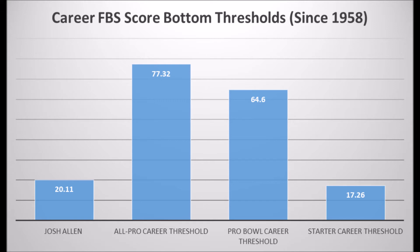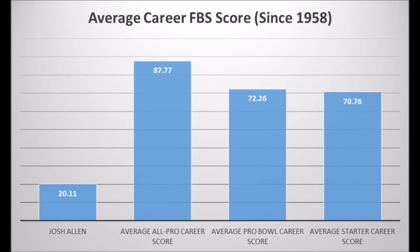The career data makes things a bit worse. Josh Allen only had a 20.11 career FPS score. The All-Pro career threshold — meaning there's never been a multiple All-Pro quarterback with less than a 77.32 career score — Josh Allen has a 20.11. The Pro Bowl career threshold is 64.6, and the starter career threshold is about 17.26, which is where Jake Delone sits. The average All-Pro score is about 87.77, the average Pro Bowl score is about 72.26, and the average starter score is about 70.76. Josh Allen again has 20.11 — not impressive.